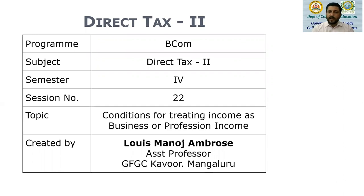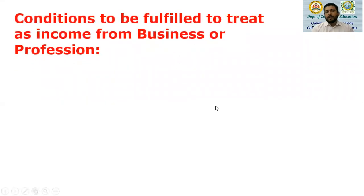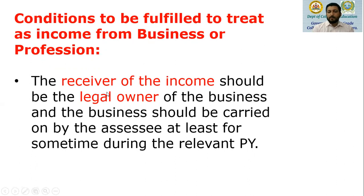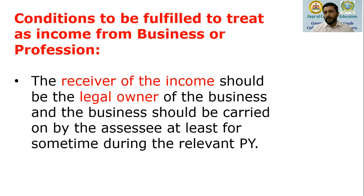There are certain conditions for treating income as business or profession income. Let's look at the conditions one by one. When we are earning a certain income, we need to first check in which head of income it should be shown. The first important condition is that the receiver of the income should be the legal owner of the business.